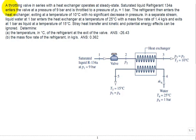Let's take a look at this problem. We have a throttling valve in series with a heat exchanger. Let's take a look at our illustration. Right here is our throttling valve, and here is our heat exchanger. And everything operates at steady state. That's good.